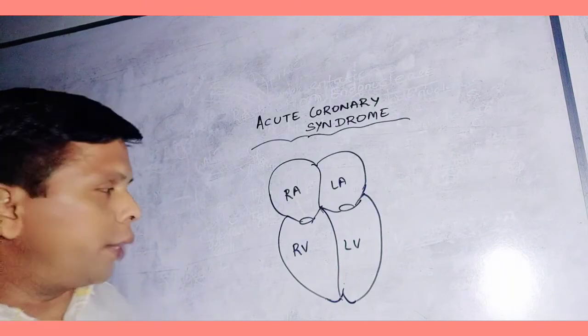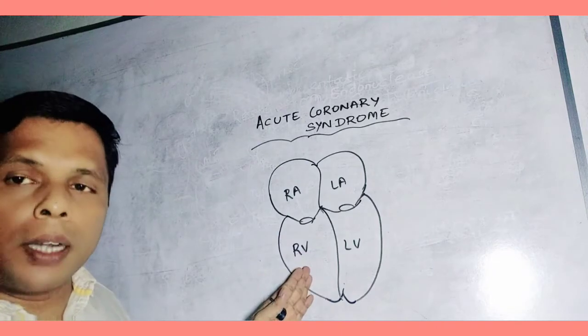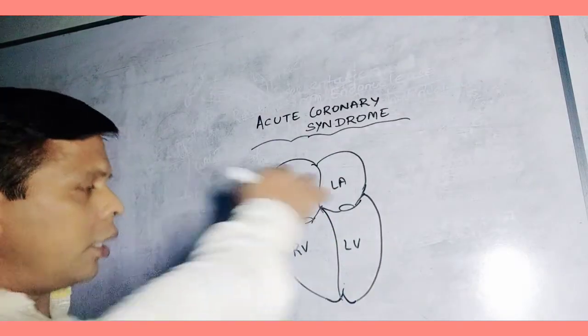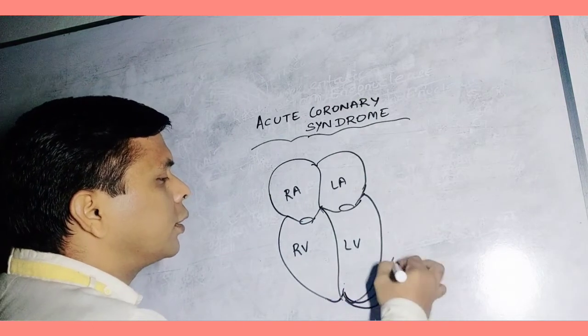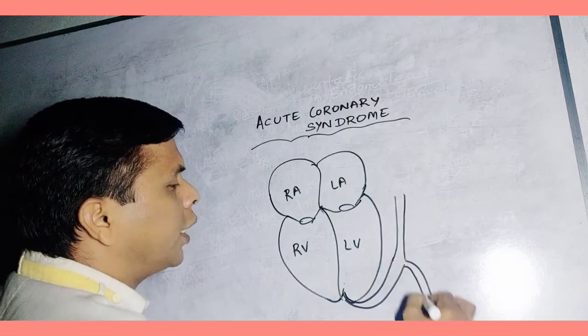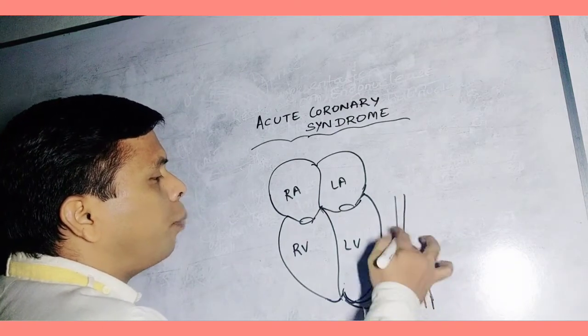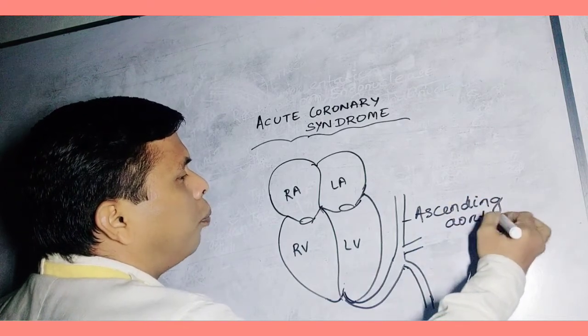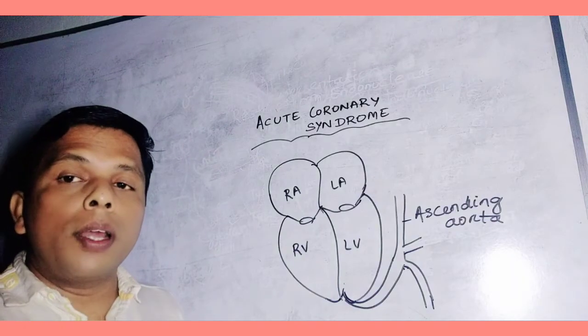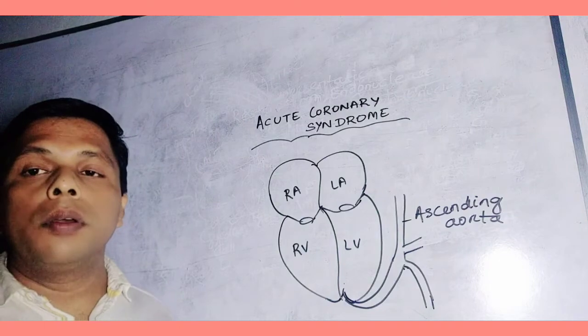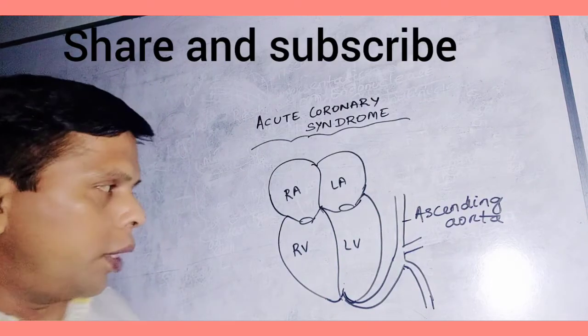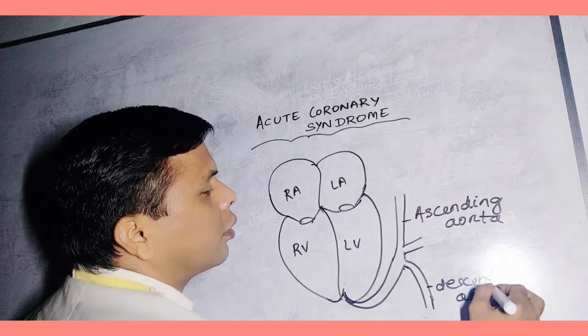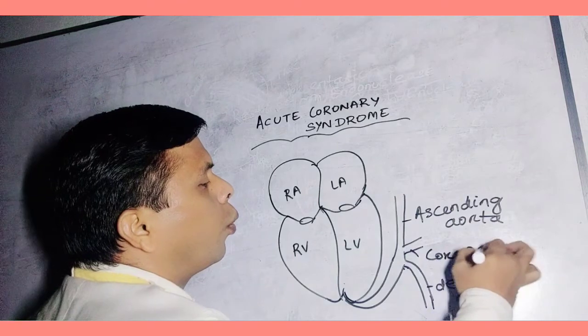Left ventricle gives rise to ascending aorta and descending aorta. Impure blood is received by the right part, it is oxygenated at lungs, then enters into left atrium, then to left ventricle. From the base there is ascending aorta and descending aorta. These are coronary arteries.